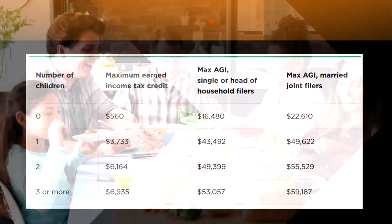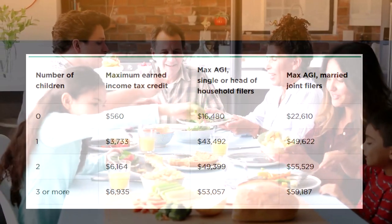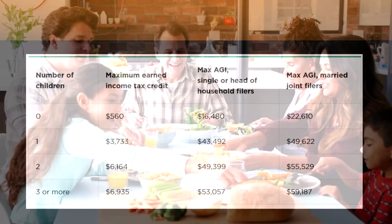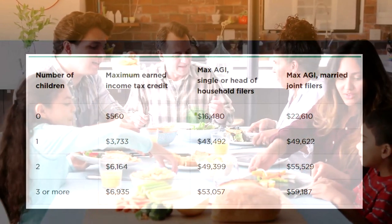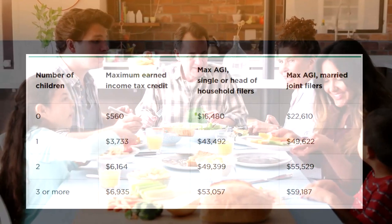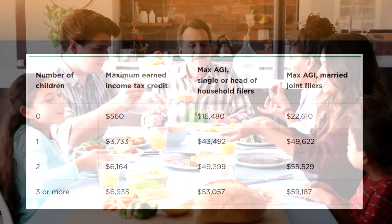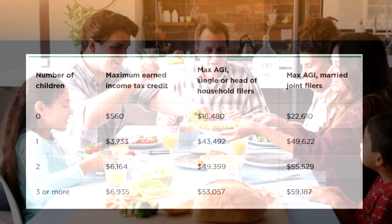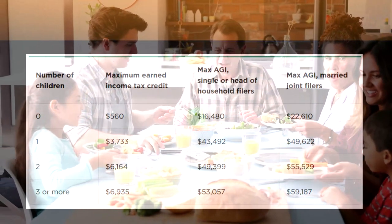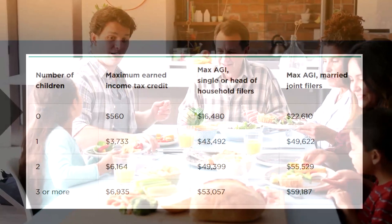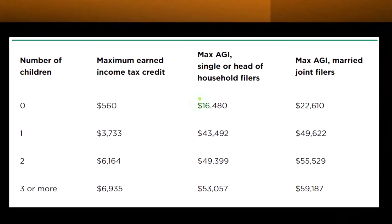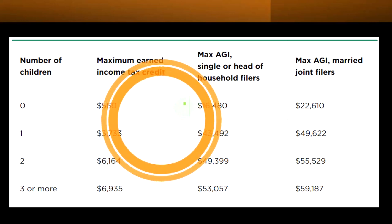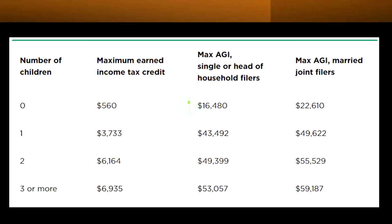For zero children, the maximum AGI for single or head of household filers is $16,480 — once your adjusted gross income exceeds that, you're generally no longer eligible for the credit. Note that this number represents the threshold where the credit phases out completely. We also want to identify where the credit is maximized — the peak of the curve — and the level at which it phases back to zero. For married filers with no children, the AGI threshold is $22,610.